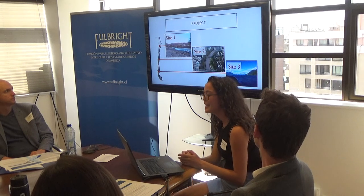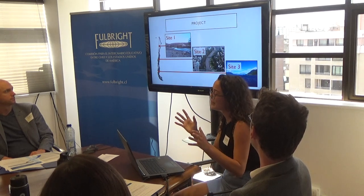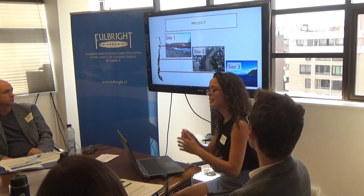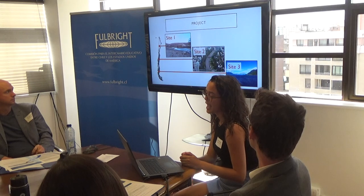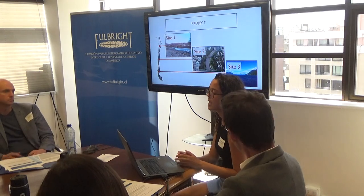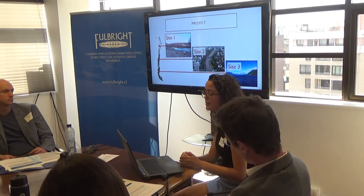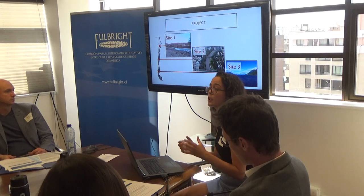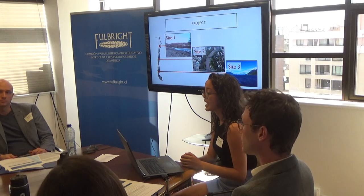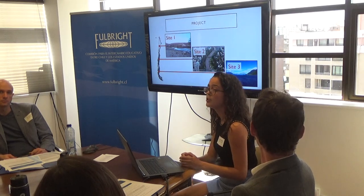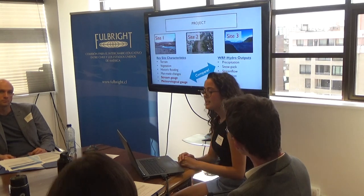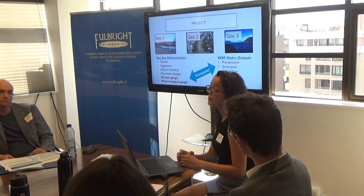My plan is to pick three sites — one up north representing the arid climate of the Atacama Desert, one here in the metropolitan region representing the temperate climate, and one down south, though I'm not sure yet how far south it will be or whether it will represent a polar climate. These sites will span a vast range of different climates and allow us to see how WRF-Hydro performs across them.